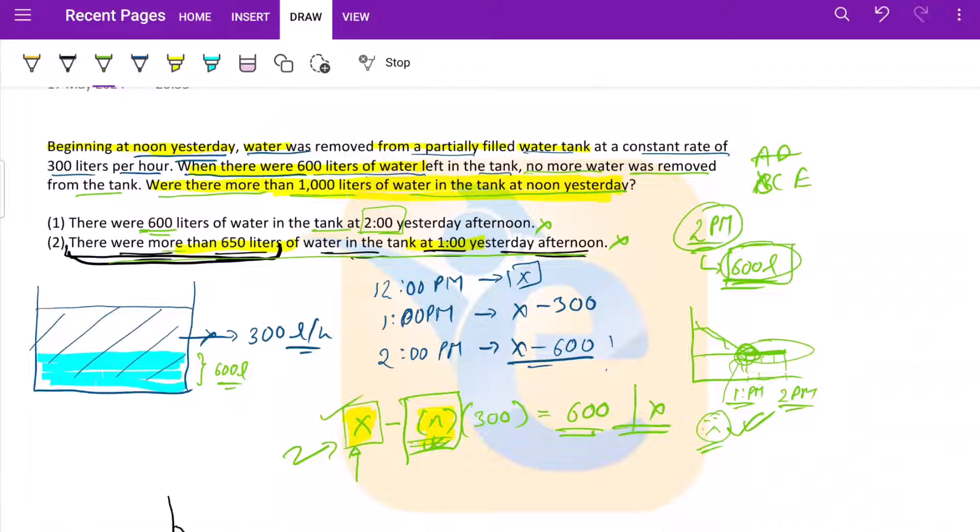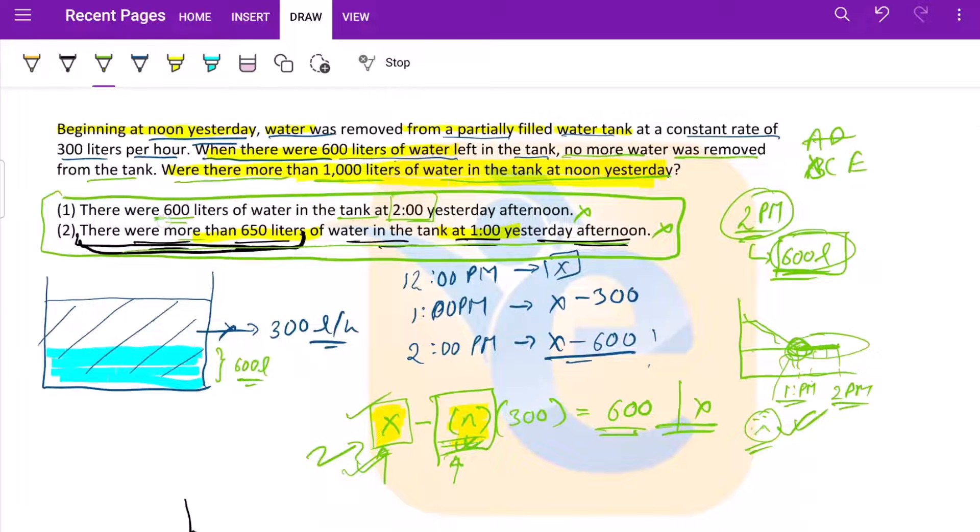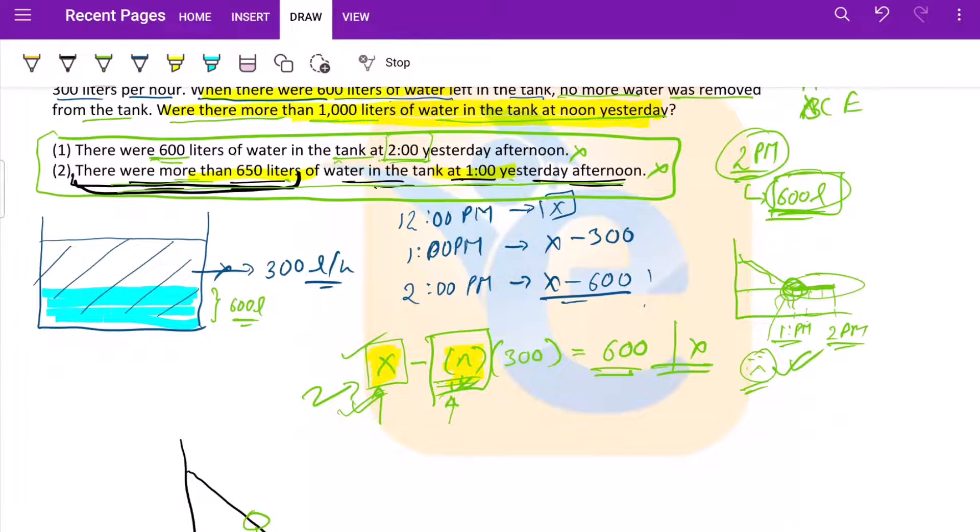This statement is insufficient to answer. We can eliminate option B. Now if we combine both, do we get our value of n so that we can calculate x? There were 600 liters of water at tank at 2. Again, we do not know at what point of time the tank was closed. There were more than 650 liters of water in the tank. So what we know is that between somewhere between 1 and 2, this tank stopped flowing. So the tank flowed for 1.xx hours.